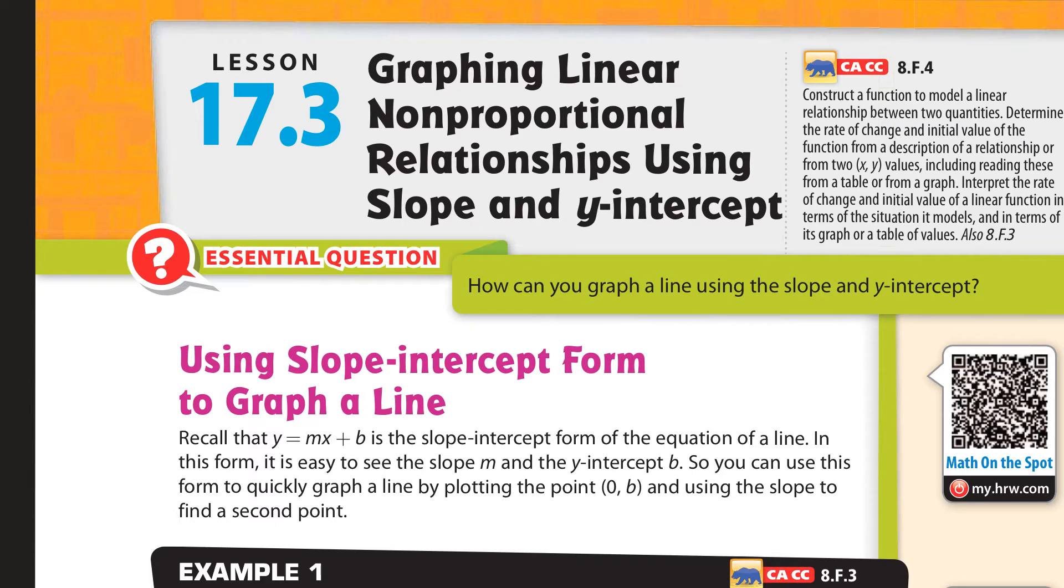Hi, and welcome to Lesson 17.3 on what we're talking about, which is the slope and the y-intercept of a line. We're going to be using these equations, y equals mx plus b, to graph this equation of a line. If you remember, the slope from the previous lesson is m and the y-intercept is b. We're going to use this to quickly graph our y-intercept (0, b) and our slope to find our second point of the line.